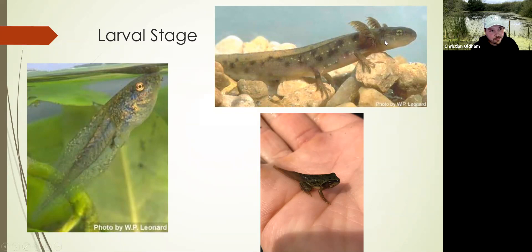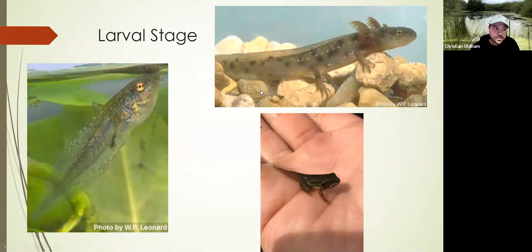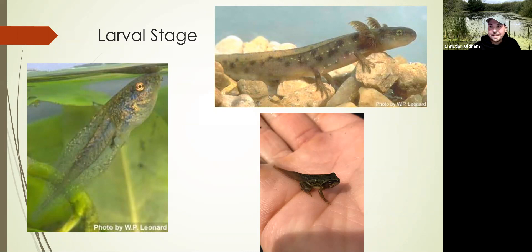This could very well be a neotenic reproductive adult salamander where they retain these external gills. They still have lungs, they still have legs, and they can reproduce — they just never leave the water. That's just not the case for frogs and toads. They are obligately forced to undergo metamorphosis when they become adults.